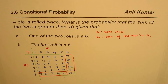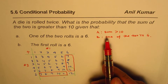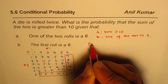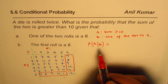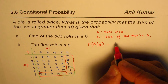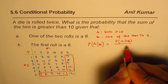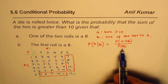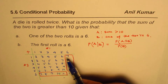In conditional probability, we are finding the probability of event A happening given that event B has already happened. The formula is: P(A|B) = P(A ∩ B) / P(B). Now, the probability of B — that one of the two rolls is a 6 — counts 10 outcomes out of 36.